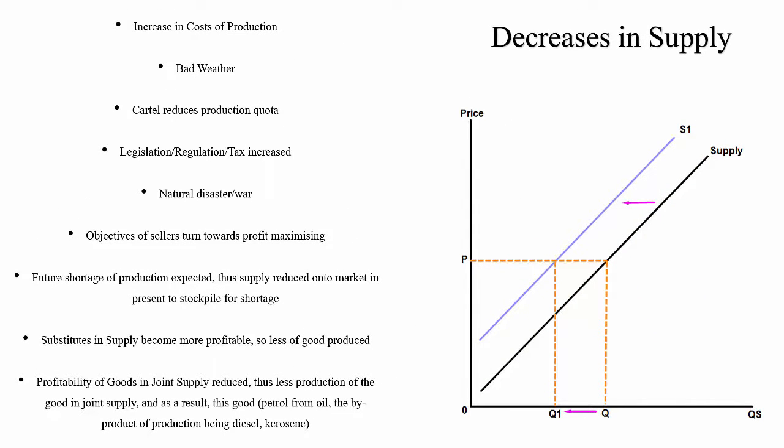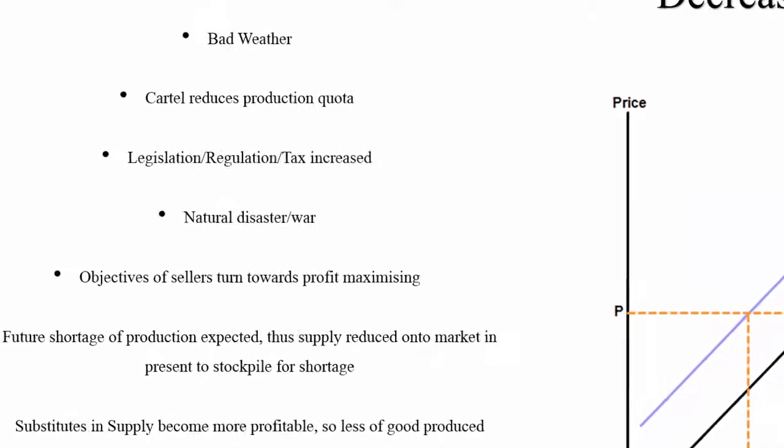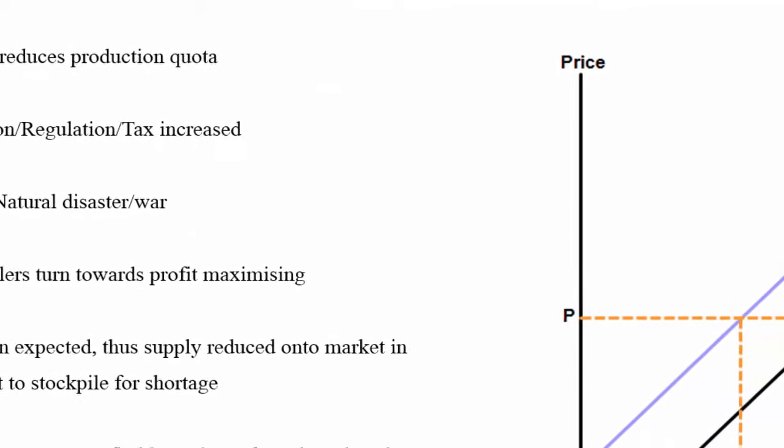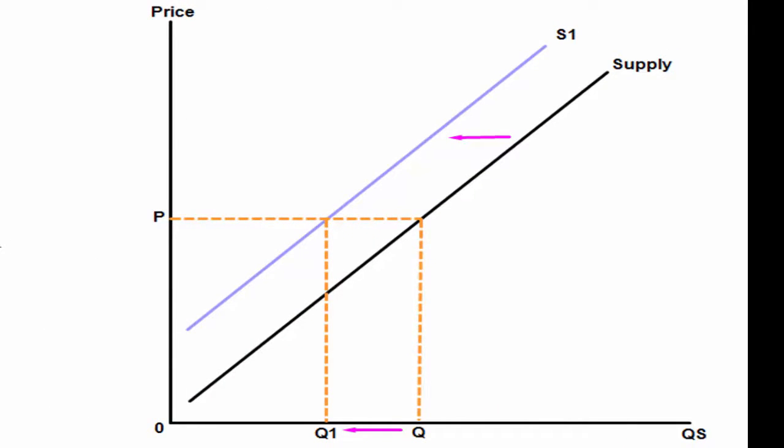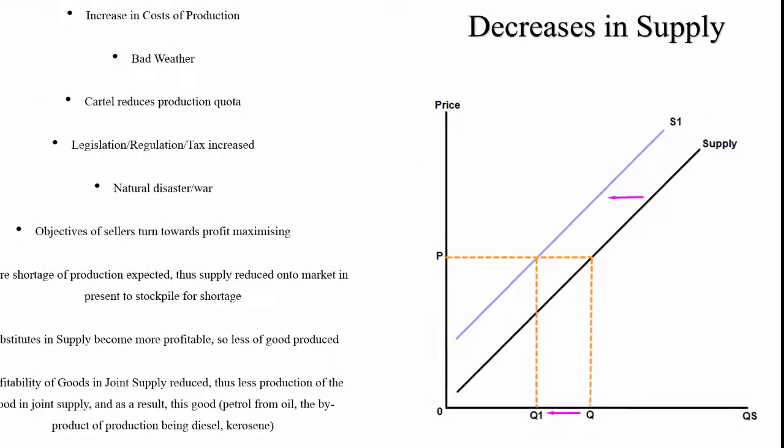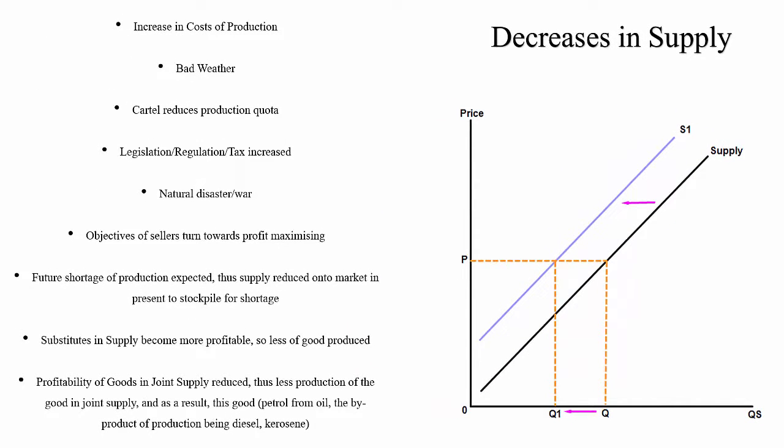Let's take an example of a natural disaster or war. If a war involves the bombing of civilian areas and some factories and farms get bombed, then the production of whatever those factories and farms made would fall. The supply curve would shift to the left and as seen on the graph, at any given price there will be less quantity supplied.